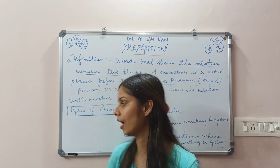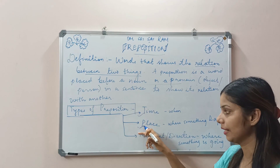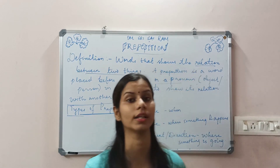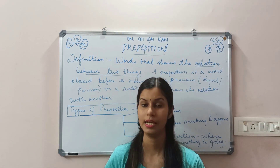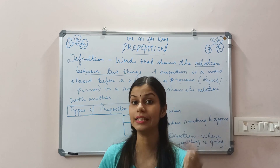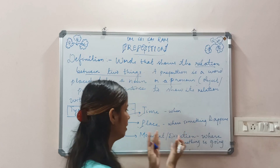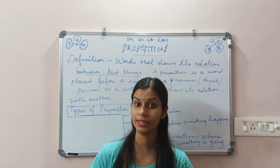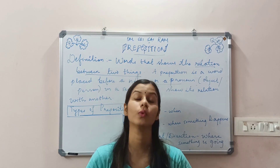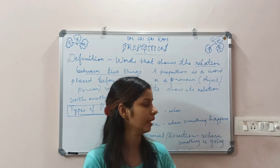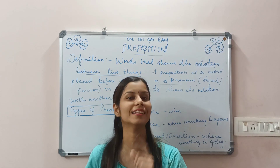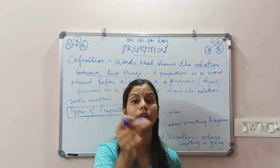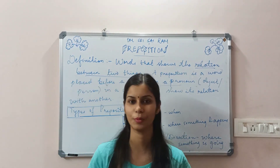This preposition has been categorized into three types: time, place, and movement or direction. Time hota hai, place hota hai, aur direction ya movement ke upar bhi preposition hota hai. These prepositions are words, and under each type — time, place, and moment or direction — we have a lot of words. Today we will be starting with the first type, which is known as time.